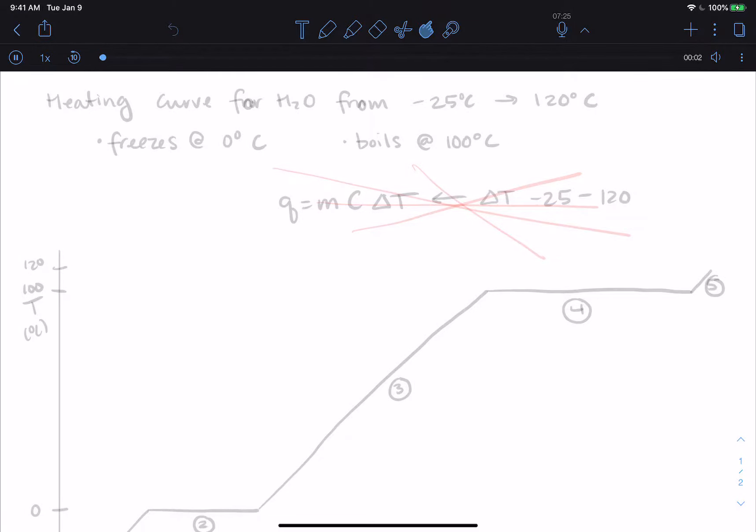All right. So we have talked in a couple of places about phase changes. We have talked about the energy that you have to put in to raise the temperature of a substance. We've talked about the energy that you have to put in to do a phase change. Now we have the ability to put those all together and I want to draw all of them together on the same picture so that we can look at from one really low temperature to one really high temperature, what happens across that entire range to the heat that you put in and the temperature change that happens during those things. So I'm going to draw a heating curve for water.